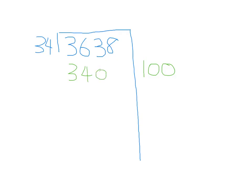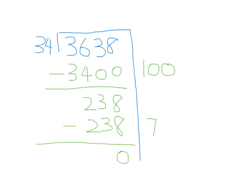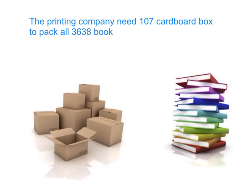Now I'm going to solve this problem in partial quotients. So now I have 238 left, and now I'm going to put 7 groups of 34 there, because I know that 5 groups of 34 would be too small. So 34 multiplied by 7 is 238. Now I have to get the answer, so this goes here. So the answer is 107. The printing company needs 107 cardboard boxes to pack all 3638 books.